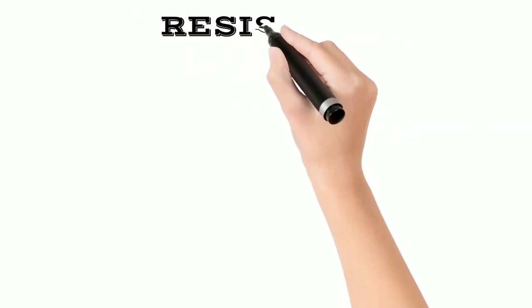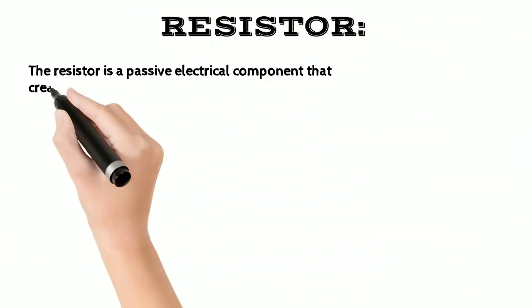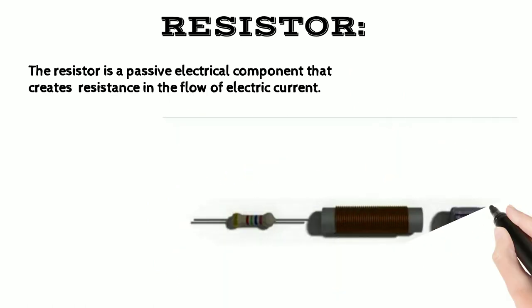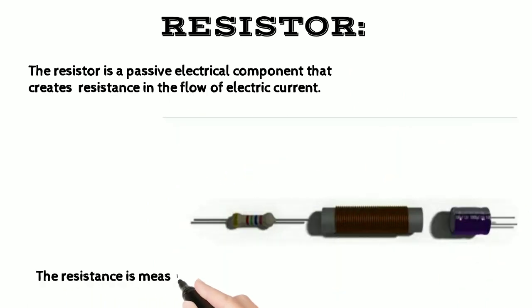Resistor. The resistor is a passive electrical component that creates resistance in the flow of electric current. The resistance is measured in ohms, omega.